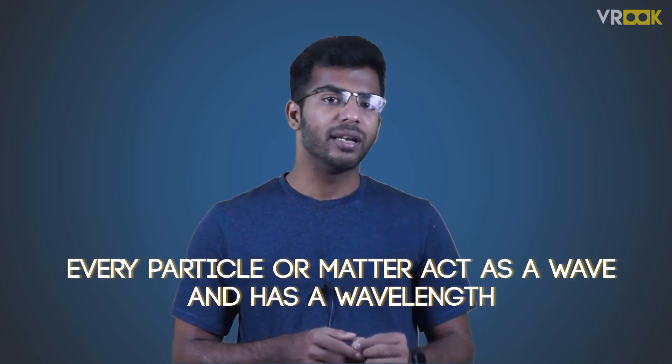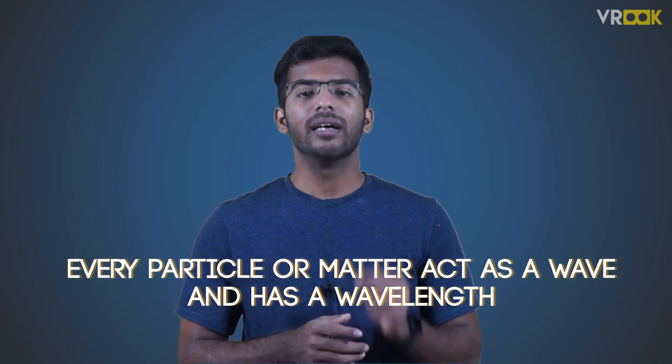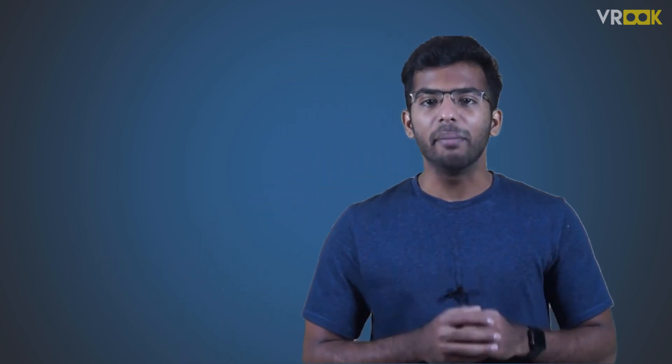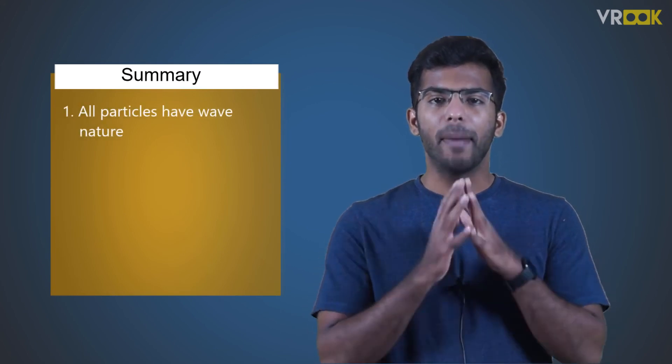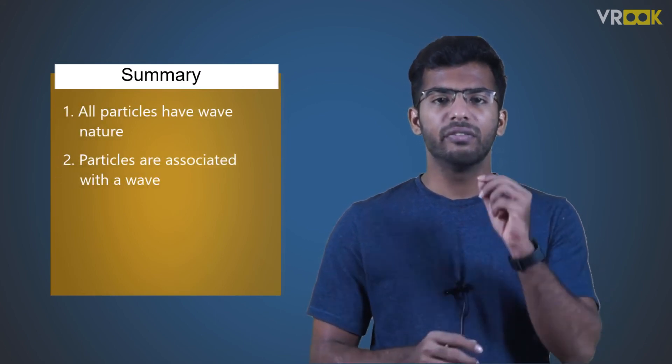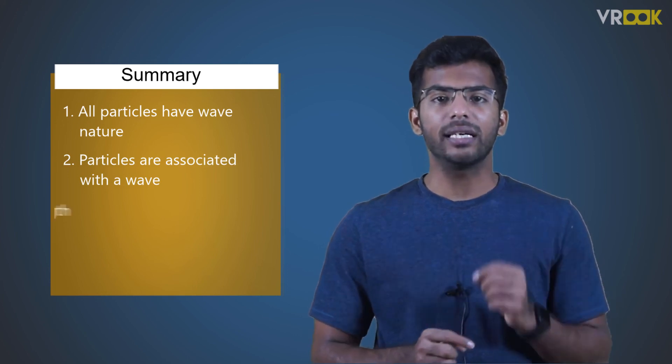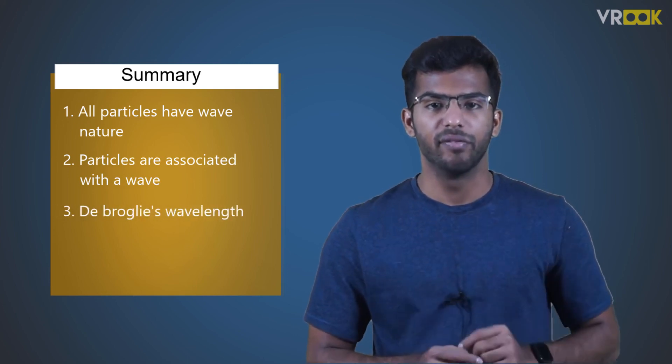This is all about de Broglie's hypothesis. Every particle or matter acts as a wave and has a wavelength. To sum up, in this video we learned that all particles have wave nature. Particles are associated with a wave and particles have a wavelength called de Broglie's wavelength.